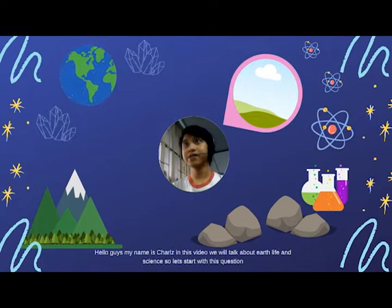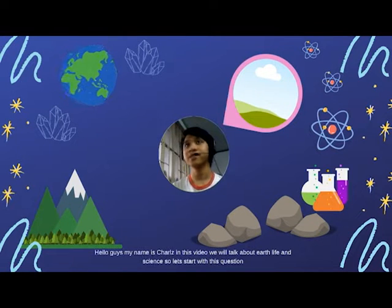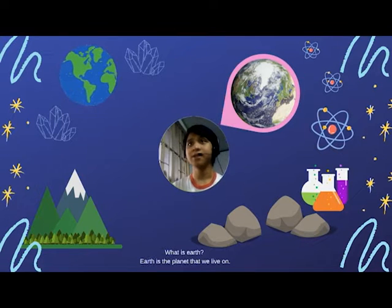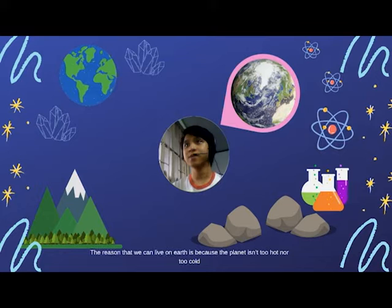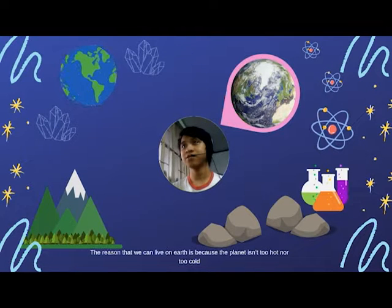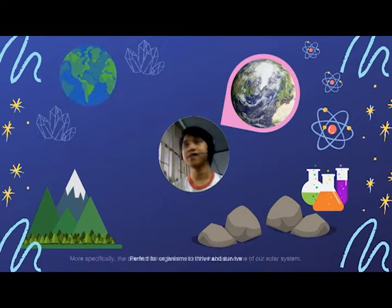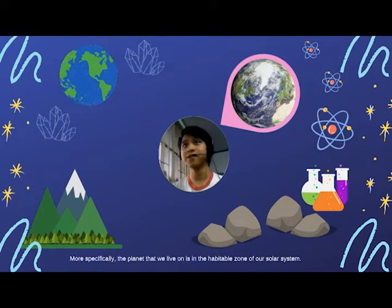Hello guys, my name is Charles and in this video we'll talk about Earth Life and Science. So let's start with this question: what is Earth? Earth is the planet that we live on. The reason that we can live on Earth is because the planet isn't too hot nor too cold — perfect for organisms to thrive and survive. More specifically, the planet that we live on is in the habitable zone of our solar system.